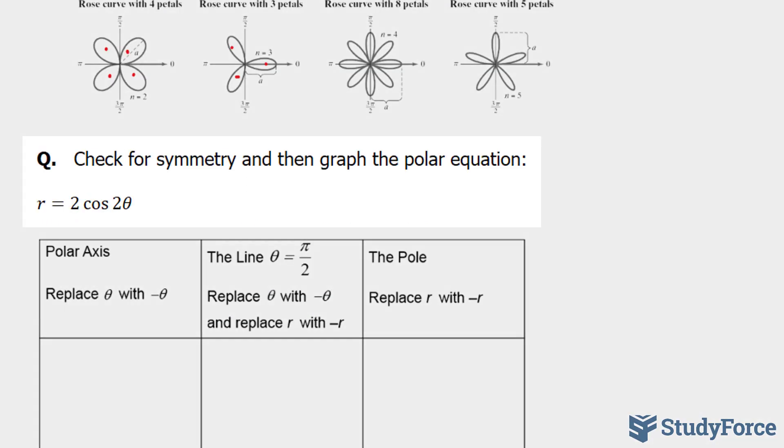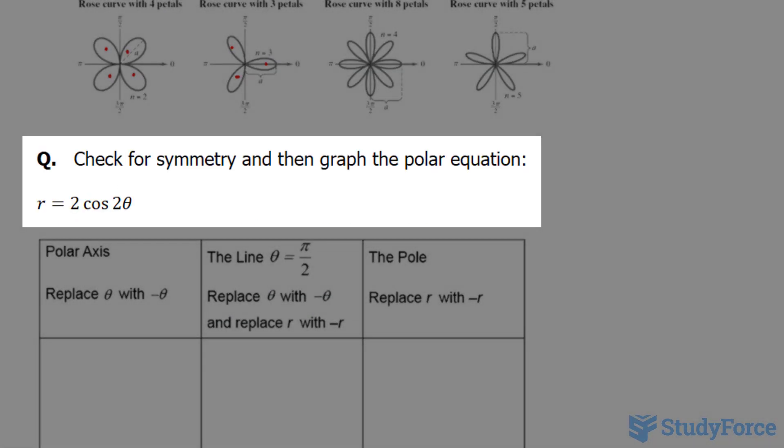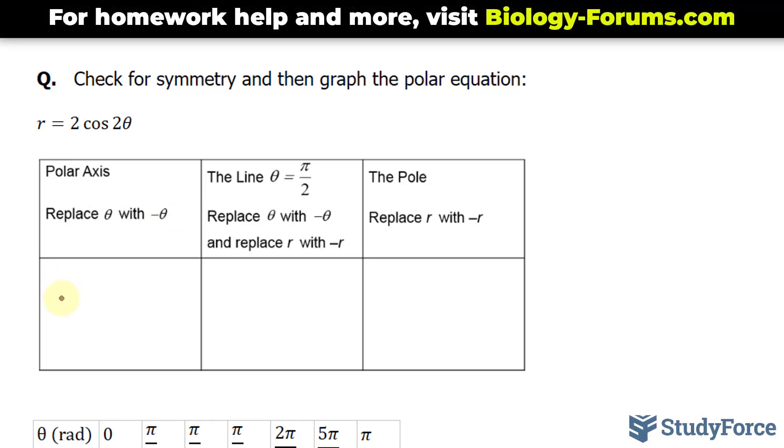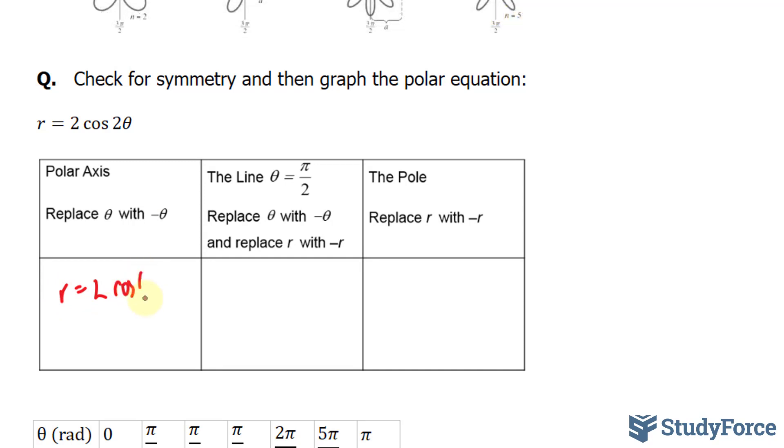The question reads, check for symmetry and then graph the polar equation. Let's start with symmetry about the polar axis. For this, you have to replace theta with its negative version. So we have r equals 2 times cosine negative 2 theta.